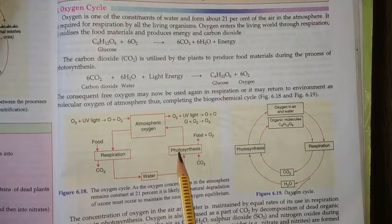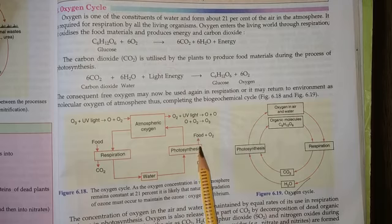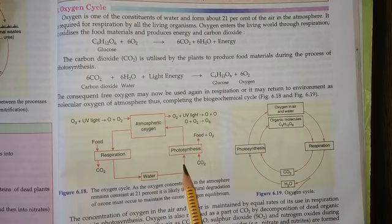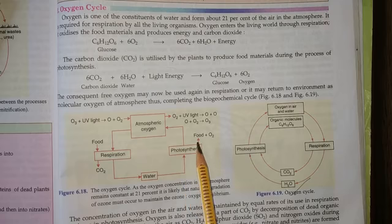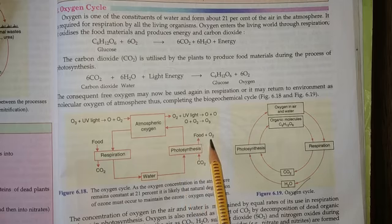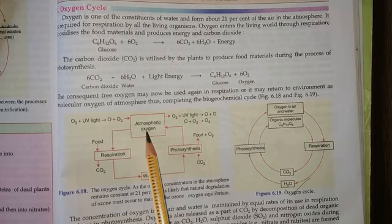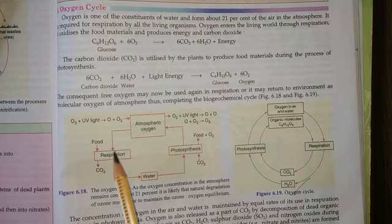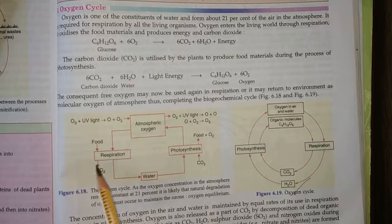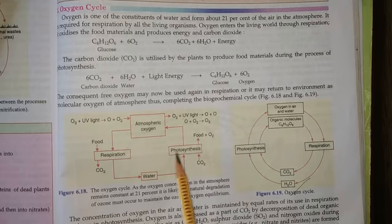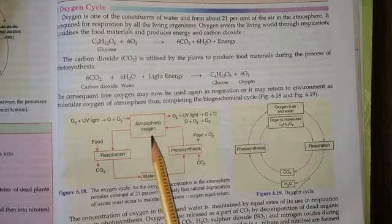In photosynthesis, CO2 and water form food in the form of glucose and release oxygen. This is photosynthesis. So atmospheric oxygen is again used in the respiration process. Food is again used in the photosynthesis. So this is the oxygen cycle.